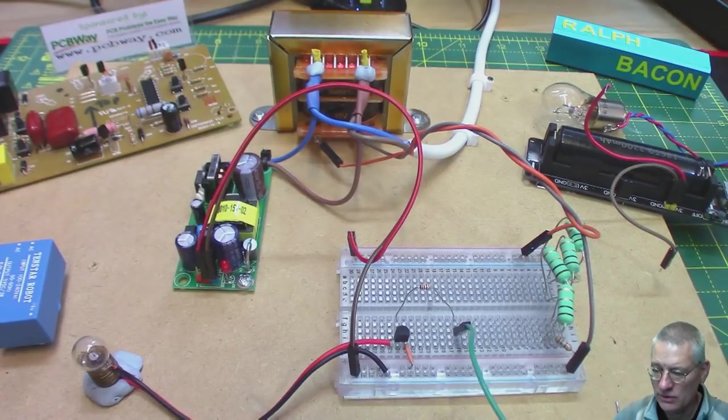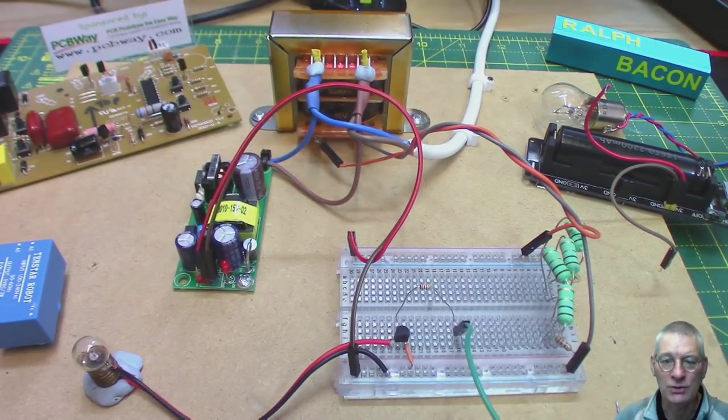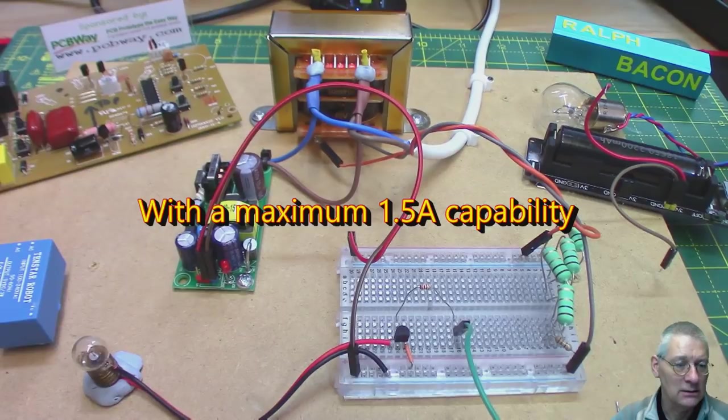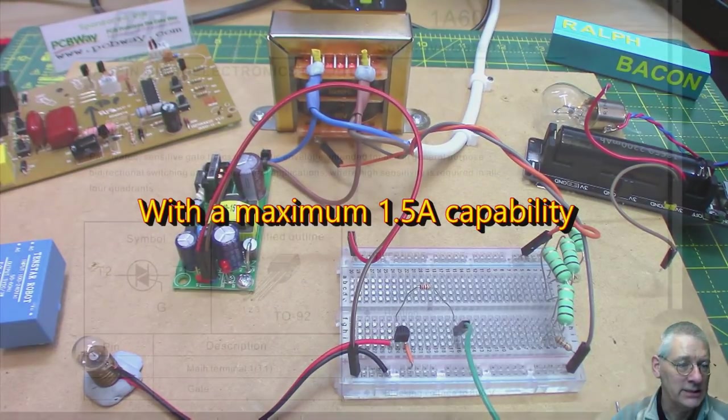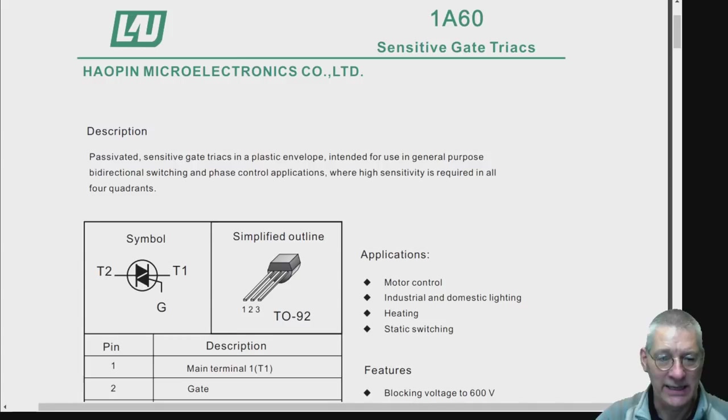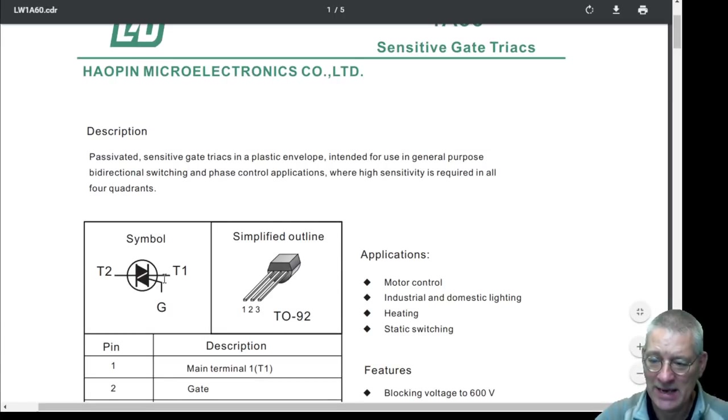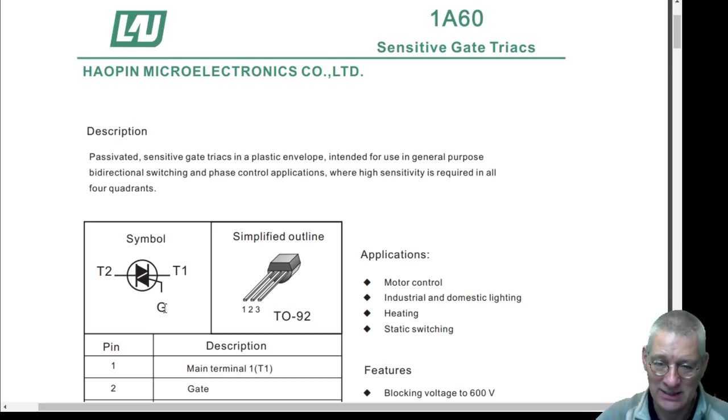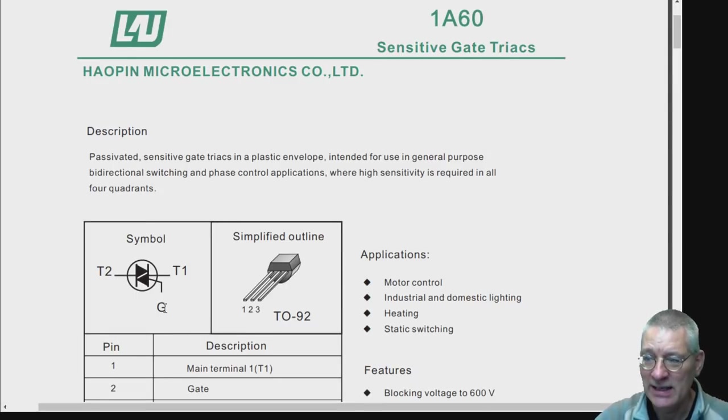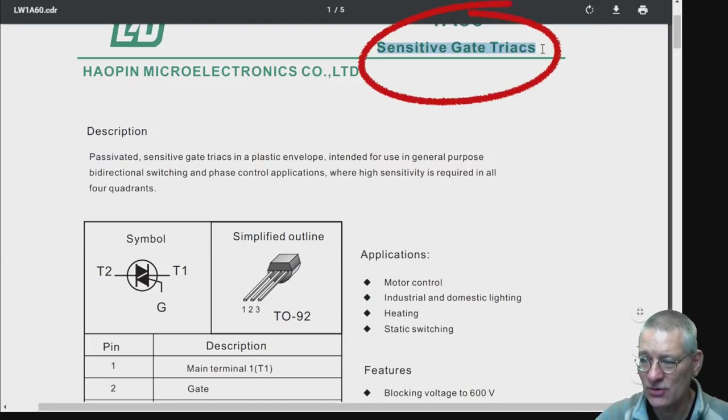The one we've got down here is a lot smaller and in fact the one we've actually got is this one here it's a Z0103. I can't say I'm particularly familiar with this particular device but as I say it's in a TO-92 package so this one here and the standard symbol T1, T2 and gate.